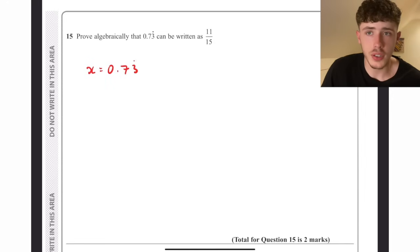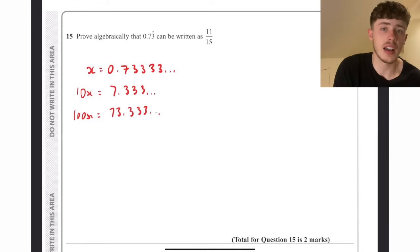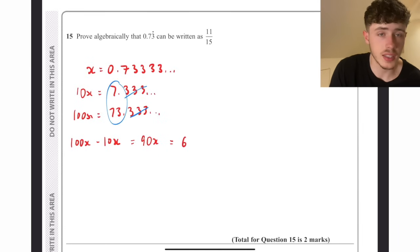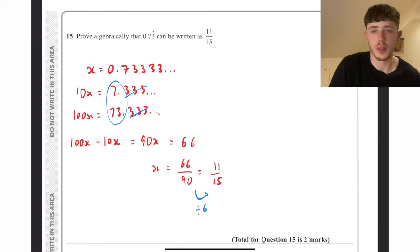Recurring decimals into fractions are normally really nice questions, so make sure you know these really well going into your final exam. You do the normal steps of x equals 0.73333 and so on, times it by 10, times it by 100, until you get the decimal portion to be exactly the same. Once we have that we take them away. So 100x take away 10x is going to be 90x, and then we do the 73 take away 7 to get 66. We bring the 90 underneath, 66 over 90 cancels down to 11 over 15 if we divide it by 6. Again, you can do all of that on your calculator as well to double check it.